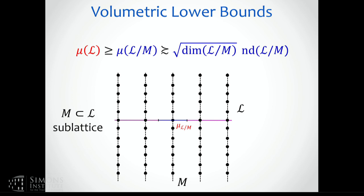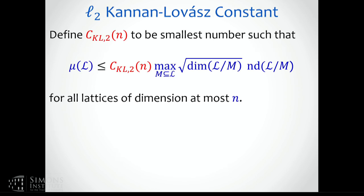What I just showed is that this is a lower bound for the covering radius. The Kannan-Lovász question restricted to L2 is asking for the reverse inequality: how close are these lower bounds to being tight? You can define what one can call the L2 Kannan-Lovász constant, which gives exactly the tightness factor of this inequality with respect to the worst-case lattice.